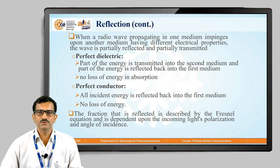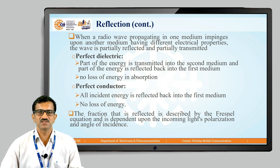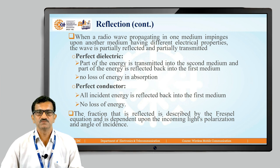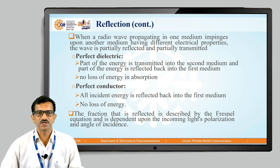When a radio wave propagating in one medium is incident upon another medium having different electrical properties, the wave is partially reflected and partially transmitted. The reflected wave does not carry the complete power of the original wave. In a perfect dielectric, part of the energy is transmitted into the second medium and part is reflected back into the first medium, with some portion also refracted.